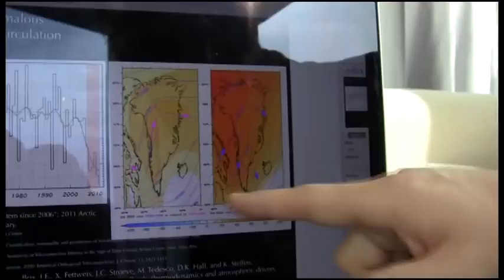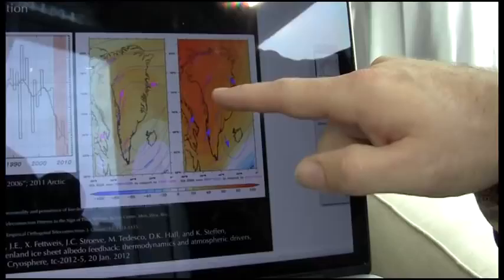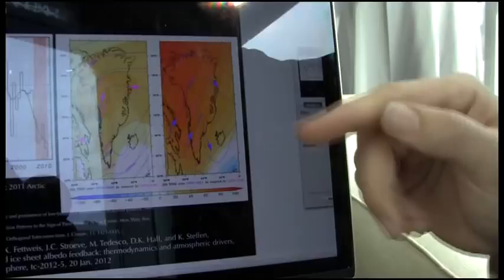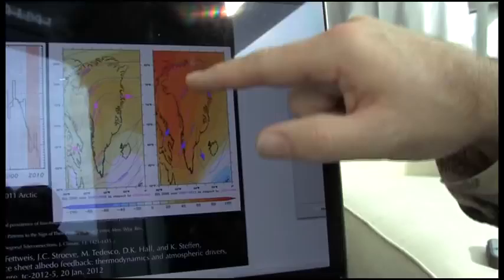People tend not to look at the North Atlantic oscillation in summer, but we found that since 2007, for six years running, the circulation pattern over Greenland is bringing warm air up from the south. This is more south air than normal. That's what the negative NAO is doing.